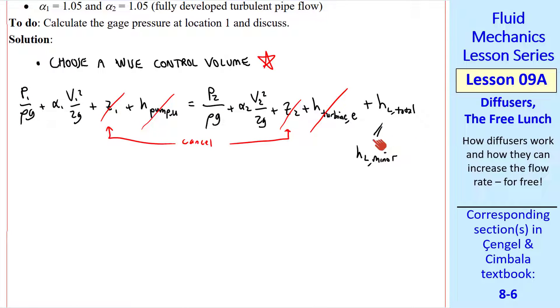All the other terms remain. But there are no major losses in this control volume. Only minor loss. And only one at that. Namely the minor loss of the diffuser.